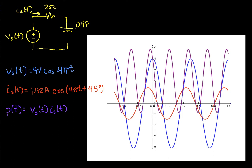And if you do the analysis, you discover that the current flowing through the circuit, that is, through the resistor, the capacitor, and the source, is 1.42 amps at the same frequency, but with a phase shift of 45 degrees. And what we're interested in is what the power is that is being dissipated by the circuit elements.